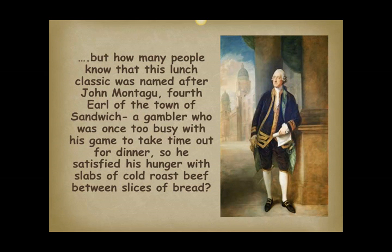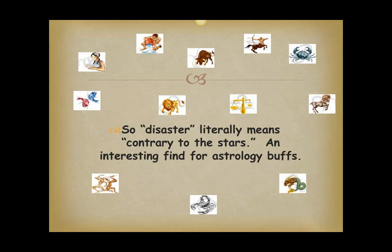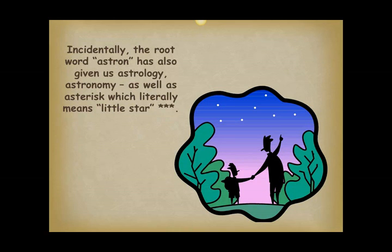Or look at the word disaster. The first part, dis, is a Latin prefix meaning not or contrary. The second part, aster, comes from the Greek word astron, which means star. So disaster literally means contrary to the stars — an interesting find for astrology buffs. Incidentally, the root word astron has also given us astrology, astronomy, as well as asterisk, which literally means little star.